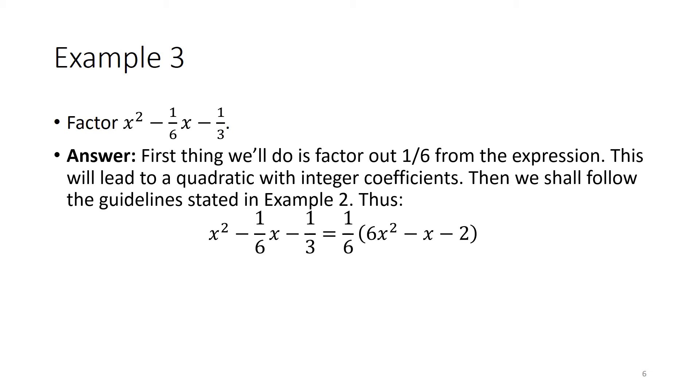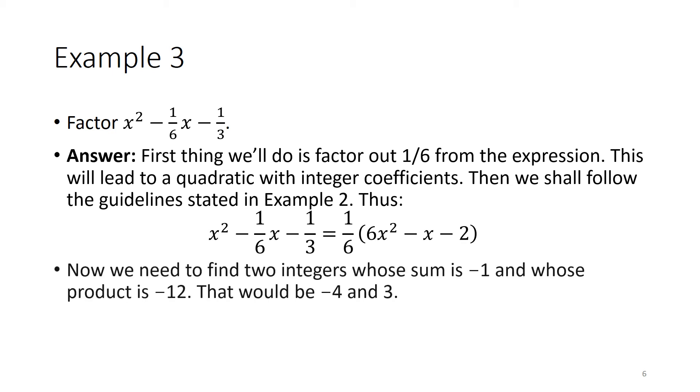Thus, x squared minus 1 sixth x minus 1 third is equal to 1 sixth times the quantity 6x squared minus x minus 2. Now we need to find two integers whose sum is negative 1 and whose product is negative 12. That would be negative 4 and positive 3.